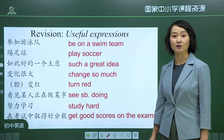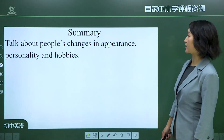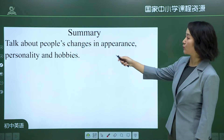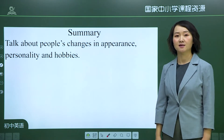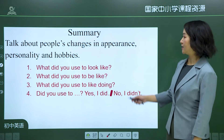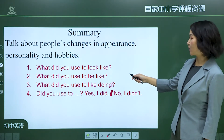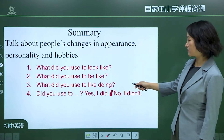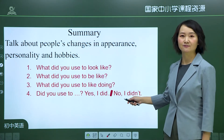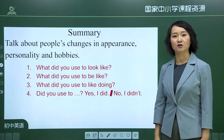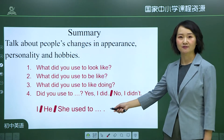According to the three questions — What did you used to look like? What did you used to be like? And what did you used to like doing? — here is a sample: 'I used to be short and thin, but now I am tall and strong. I used to be shy and quiet, but now I am outgoing. I used to like playing soccer, but now I like basketball more.'